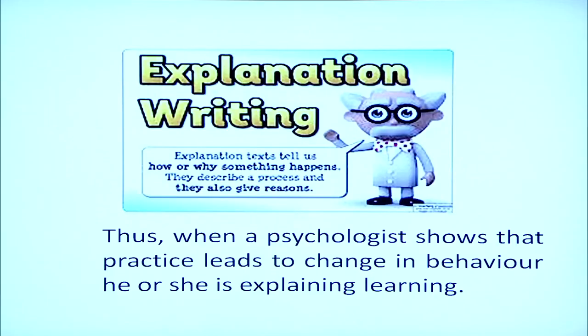The second goal is explanation. Explanation means stating the factors which determine the phenomena under study — that is, providing the probable causes which make something happen. For example, when a psychologist shows that a particular practice leads to a change in behavior, he or she is explaining — specifically, how the kind of practice you do affects your learning.